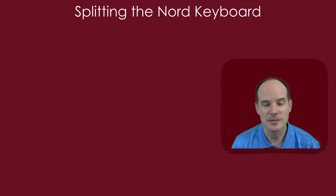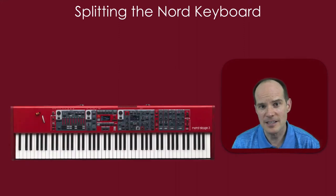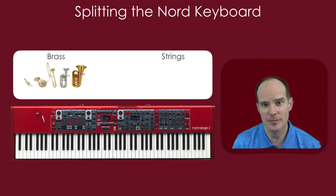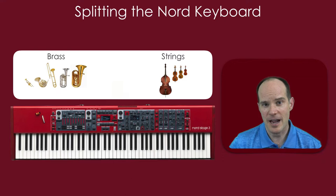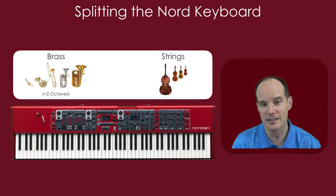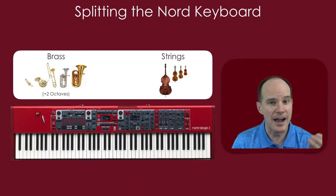Hi, I'm Mark and this is My Keys to Music. A subscriber asked how do I split the Nord keyboard in such a way where I can have my brass on the left side of the keyboard and my strings on the right, but at the same time I want my brass to be in the upper register. How do I get that accomplished?